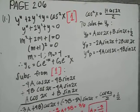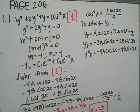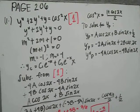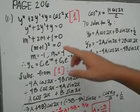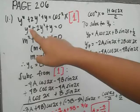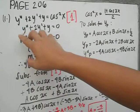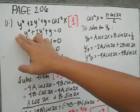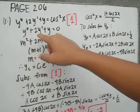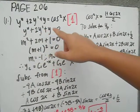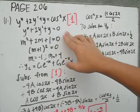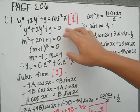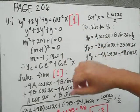This is page 206, number 11. The given equation is y double prime plus 2y prime plus y is equal to cosine squared x.